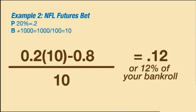Example 2: an NFL futures bet. Assume your chances of winning are 20% and the odds are plus 1,000, or 10 to 1. Then K will be .12, or 12% of your bankroll.